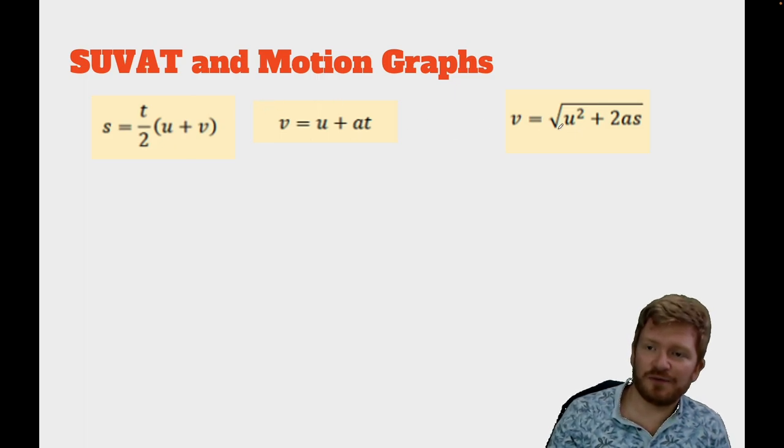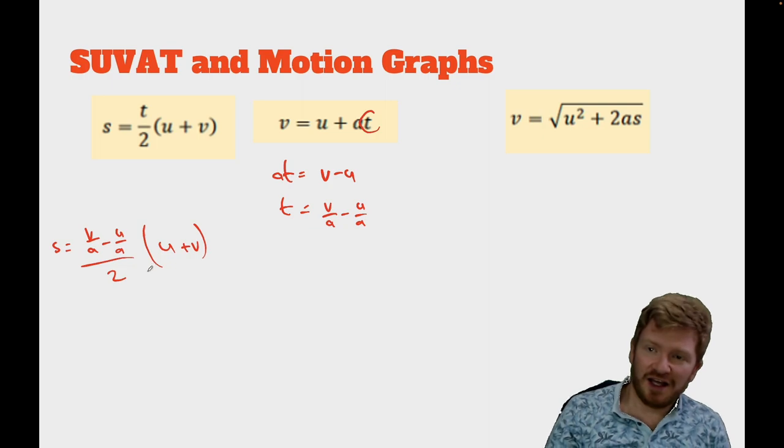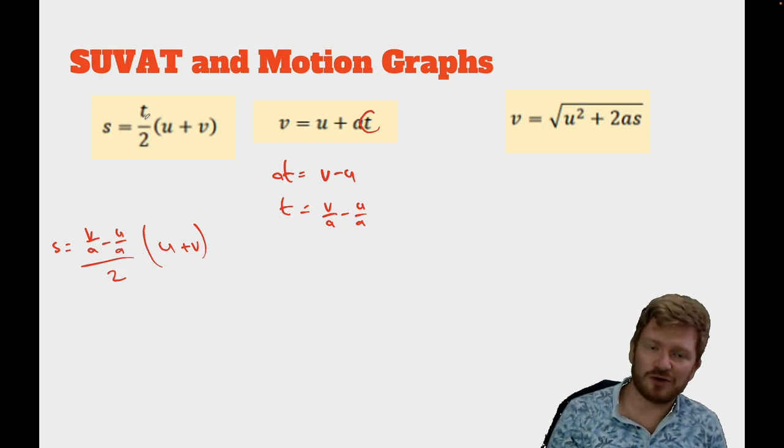Final equation that you might want. From this one, I'm now trying to get rid of time. So, I want to get rid of time. A little bit trickier from this one. But let's again just do it the same way I have already. So, if I rearrange this, I can say at is equal to v minus u. And then t is equal to v over a minus u over a. Substitute it into here. So, v minus u over a all divided by 2 lots of u plus v is all equal to s. Now, this is getting a little bit tricky. So, potentially this isn't the smartest way to go around this. Maybe I should have rearranged this equation instead.